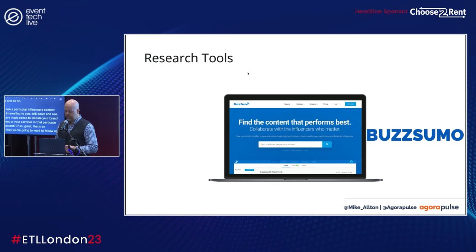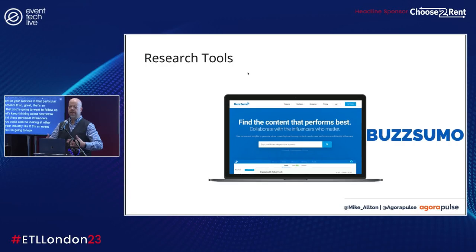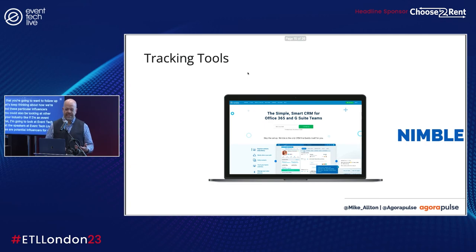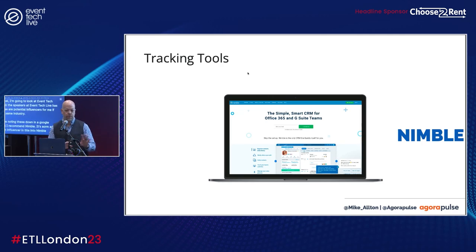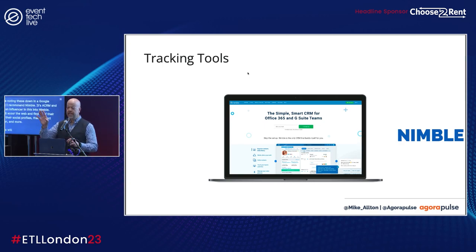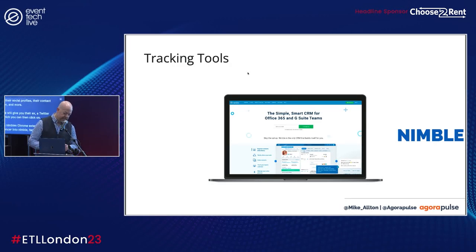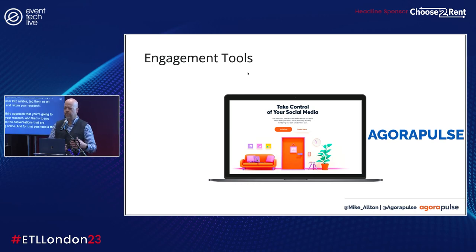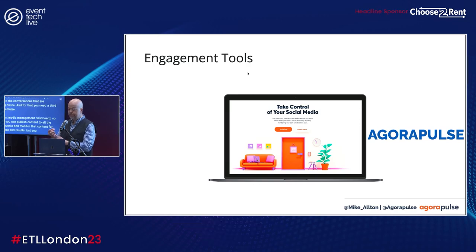You could also look at other events in your industry — if I'm an event professional, I'll look at Event Tech Live and all the speakers here, as these are potential influencers for me. You can note these down in a Google Sheet, but I recommend Nimble, a CRM. If you put an influencer into Nimble, it will scour the web and find all their websites, social profiles, and contact information. BuzzSumo will give you their Twitter profile, which you can click on and, using Nimble's Chrome extension, import that influencer into Nimble, tag them, and return to your research. A third research approach is to pay attention to online conversations — for that you need Agorapulse, a social media management dashboard. You can publish content, monitor engagement, and set up powerful searches around specific influencers, hashtags, and filter by location and more.